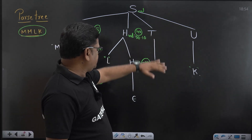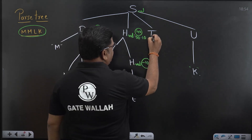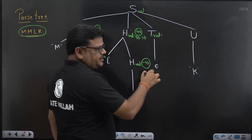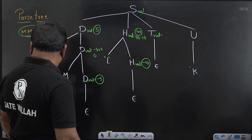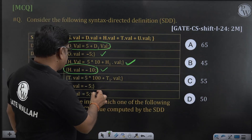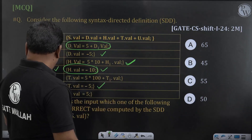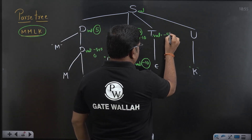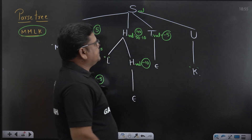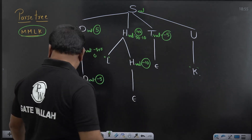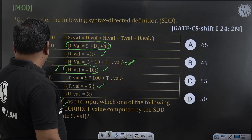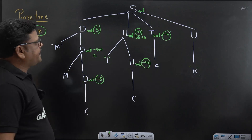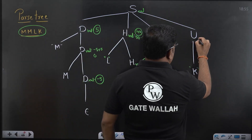Next, for T.val: whenever we use the production T → ε, the rule associated is T.val = minus 5, so we take minus 5 directly. Then for U → K, whenever we use this production, U.val is 5. So here U.val is 5.